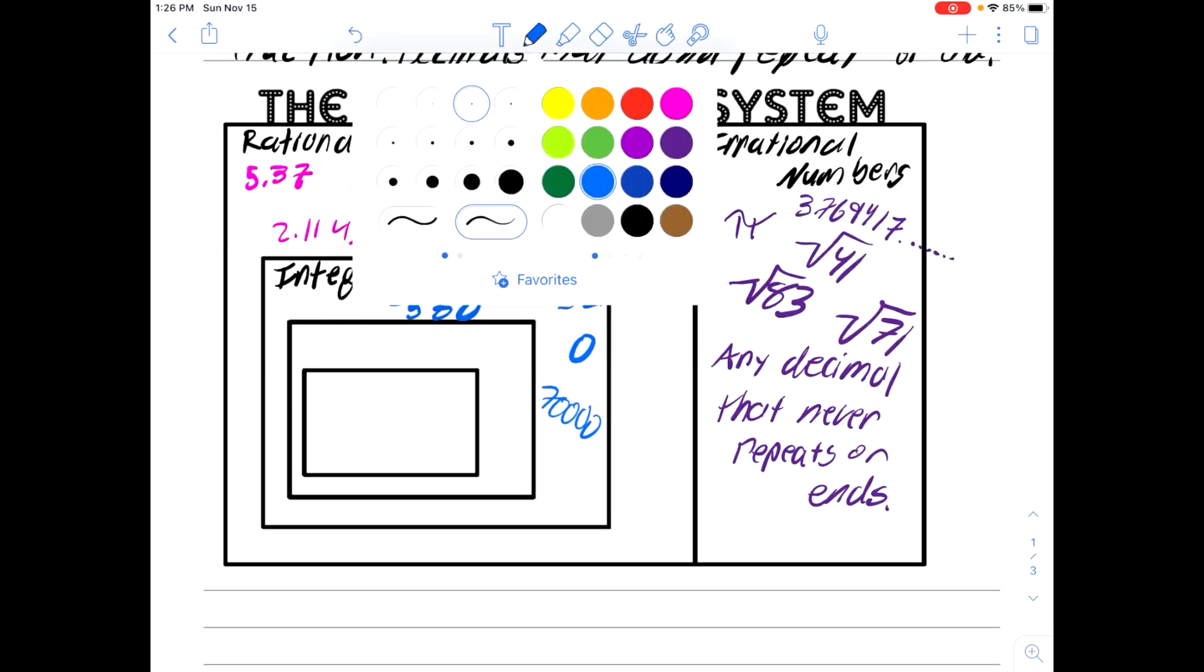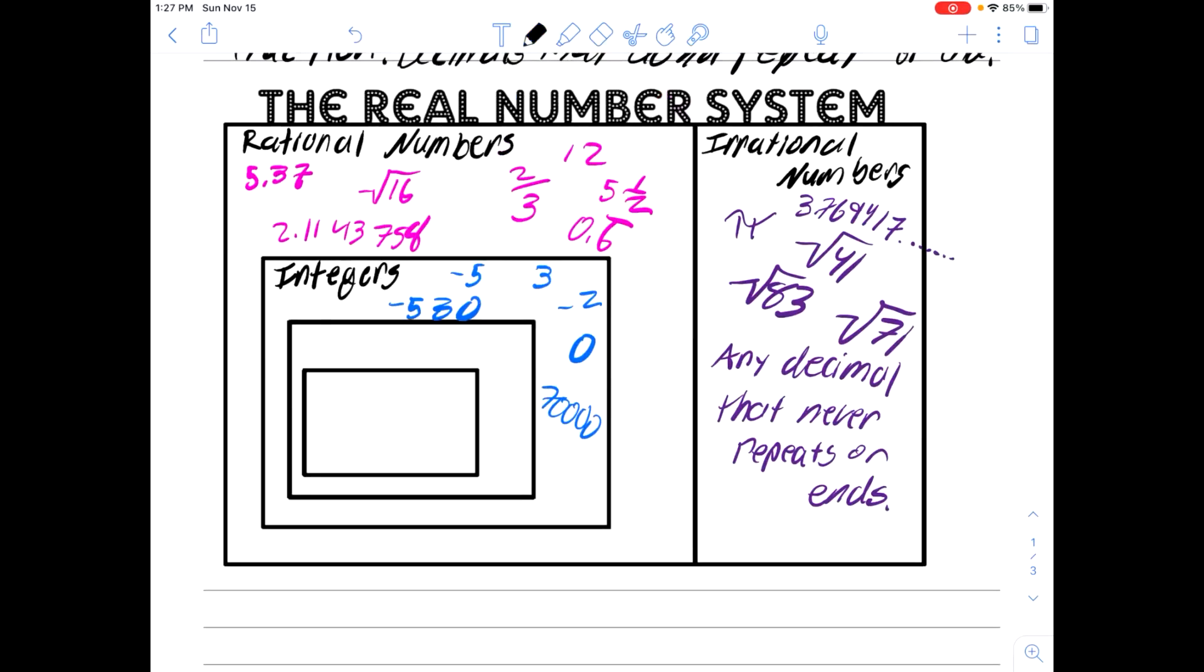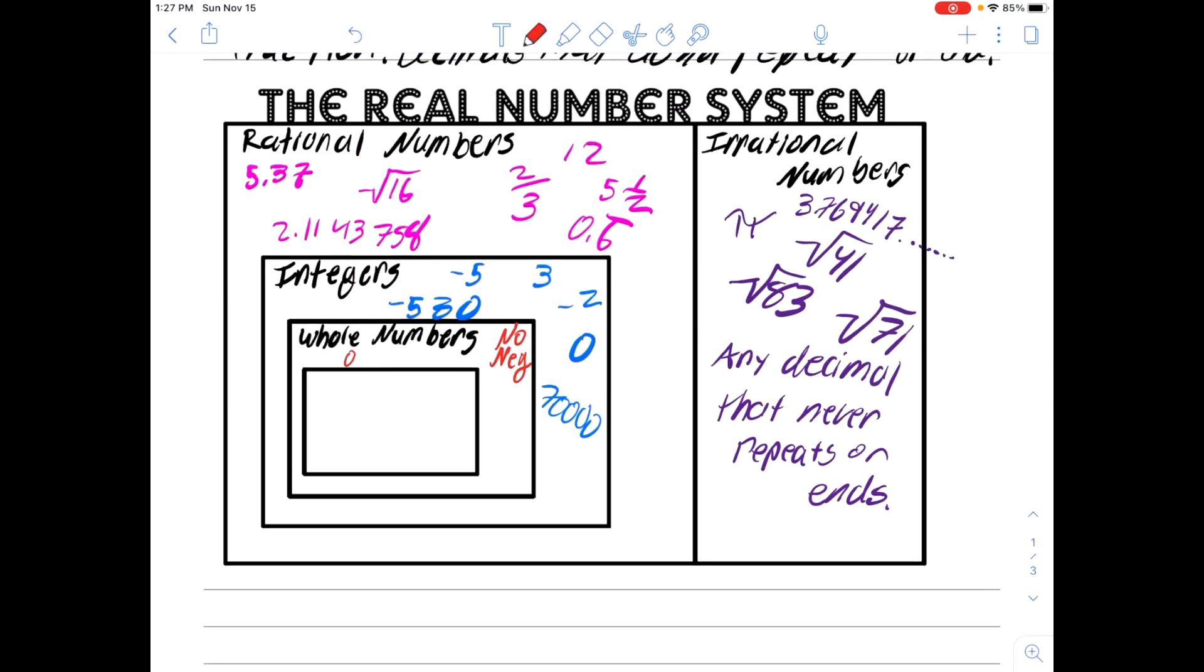The next classification is the whole numbers. Now, if you're wondering what's the difference between an integer and a whole number, whole numbers say no negatives. So this can be any whole number. It can include 0, 15, 31275. But no negative numbers are allowed.